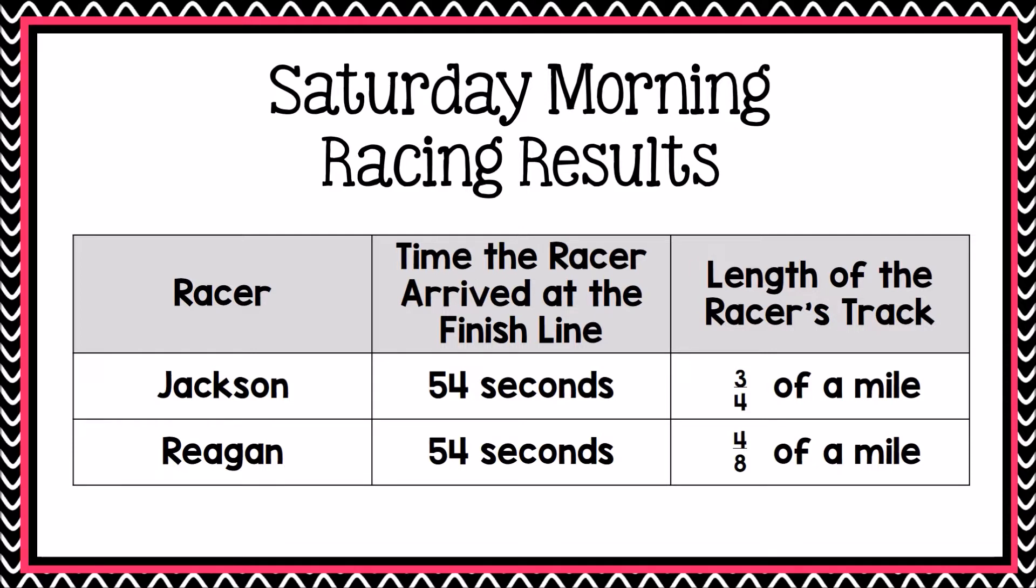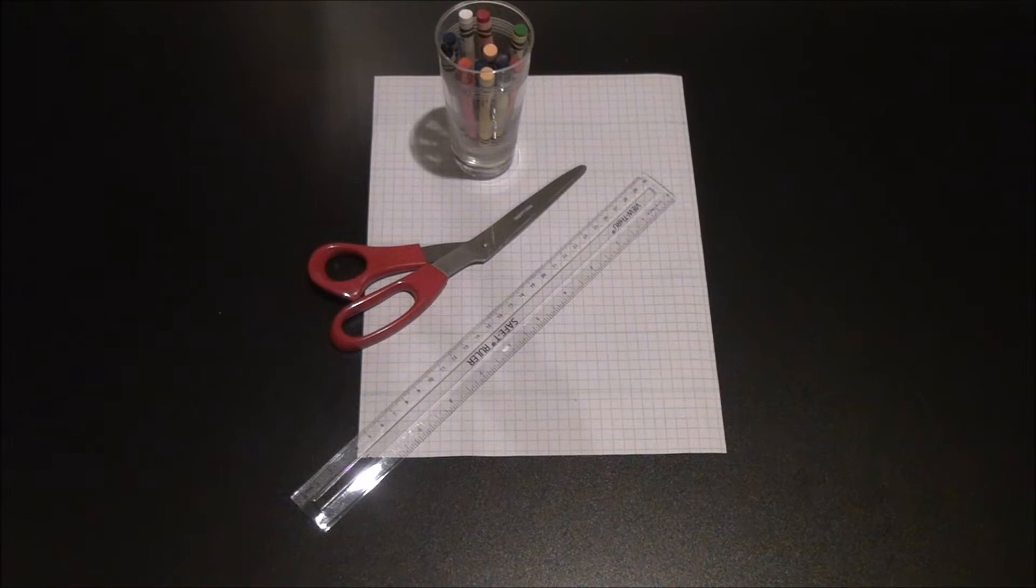Jackson traveled three-fourths of a mile. Reagan traveled four-eighths of a mile. Our job is now to determine who traveled further and who will be the winner of Saturday morning's race. In order to figure out who traveled further, Jackson or Reagan, it's helpful to create a visual representation to actually see Jackson's distance and Reagan's distance side-by-side.